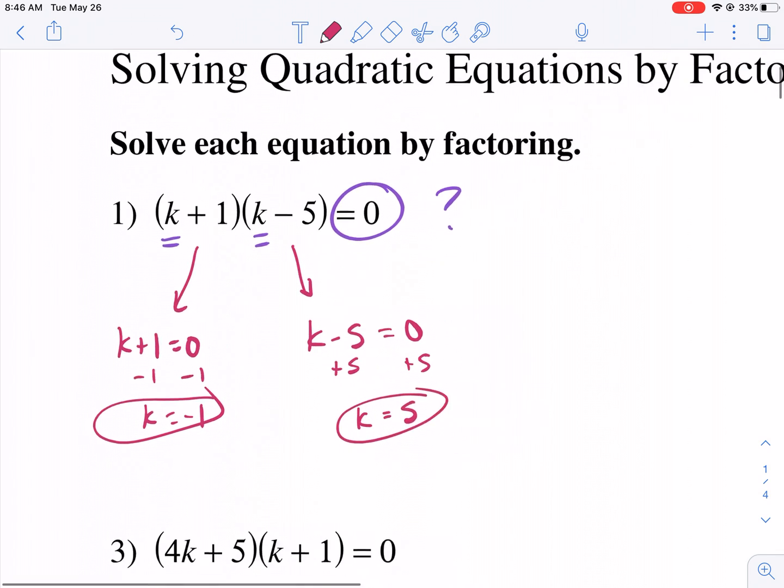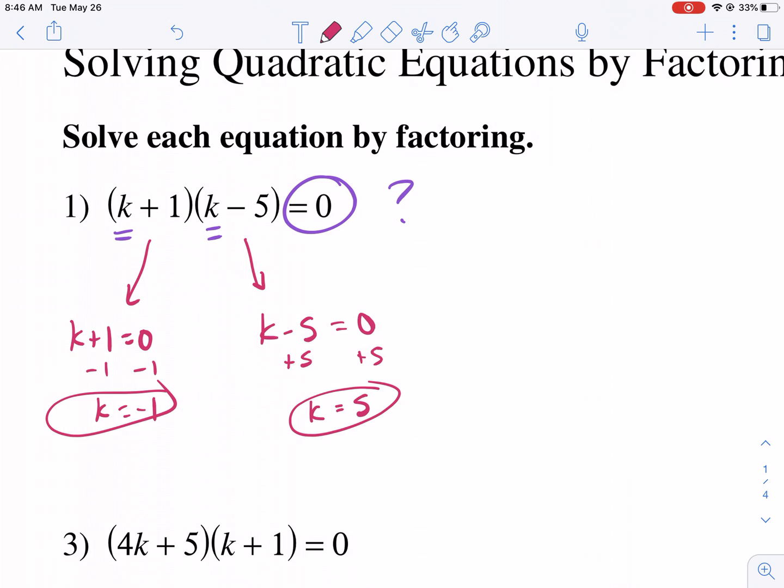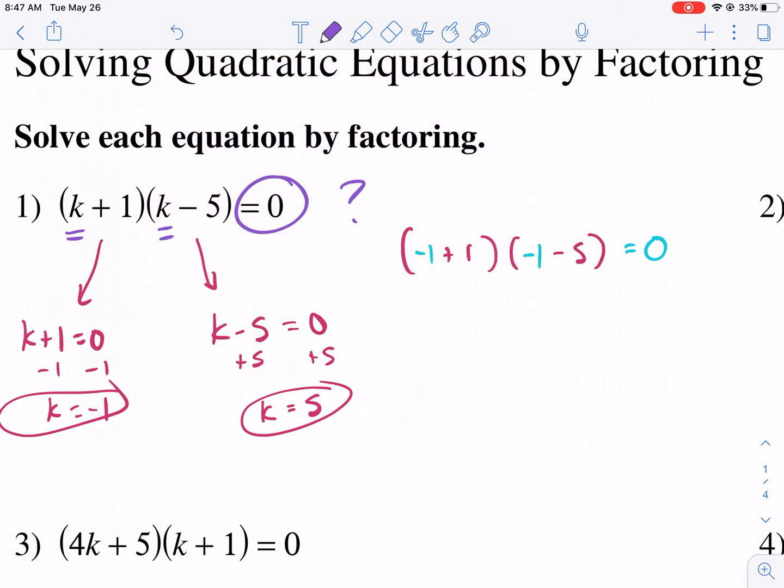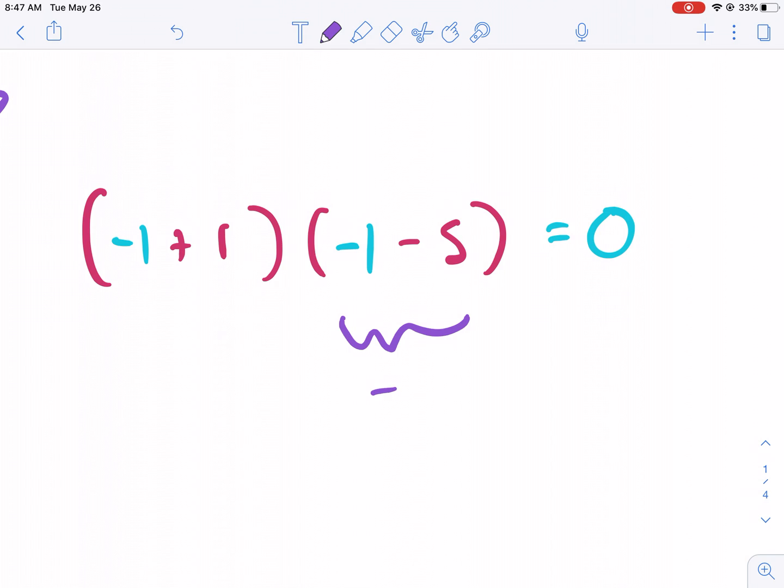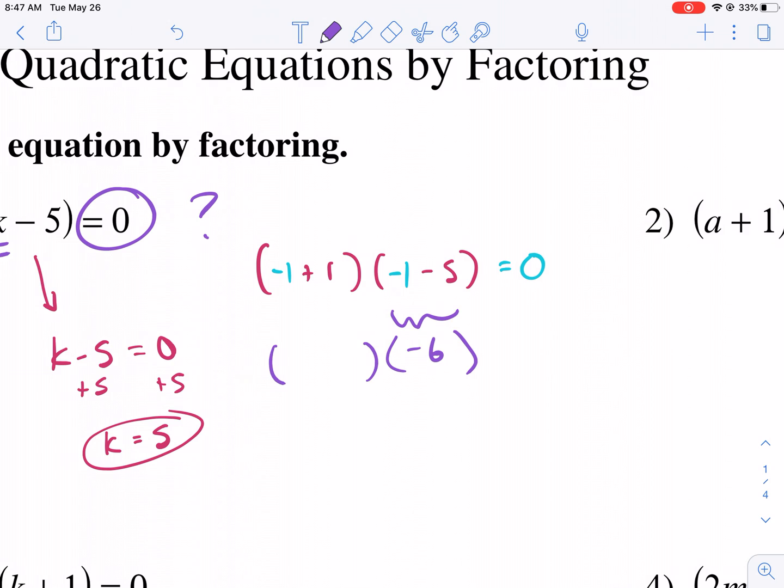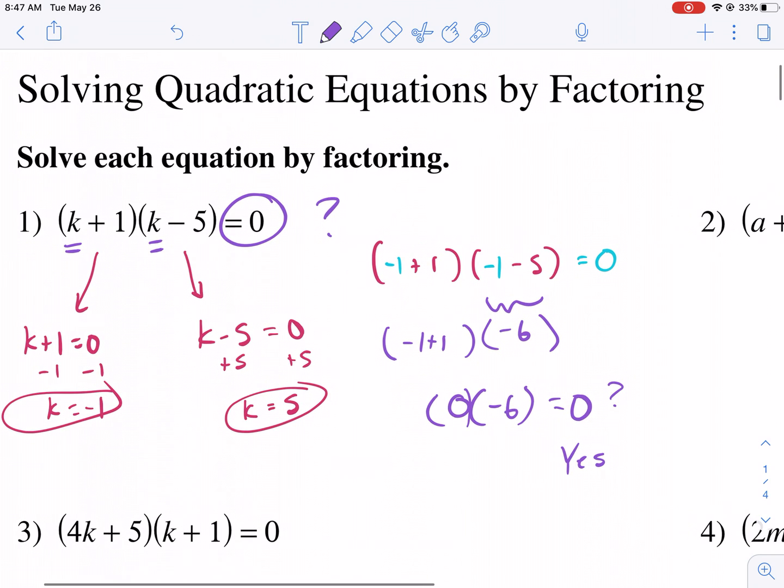Why does this work? Well, what happens if we plugged in negative 1 for k? So I'm going to go ahead and rewrite this, but instead of writing k, I'm going to write in negative 1. Does that equal 0? Well, as you can see in the right parenthesis, we get negative 6. Well, that doesn't really help us, but take a look at this. We have negative 1 plus 1, that equals 0. So now we have 0 times a negative 6. Does that equal 0? Yes. Because anything times 0 is going to be equal to 0.